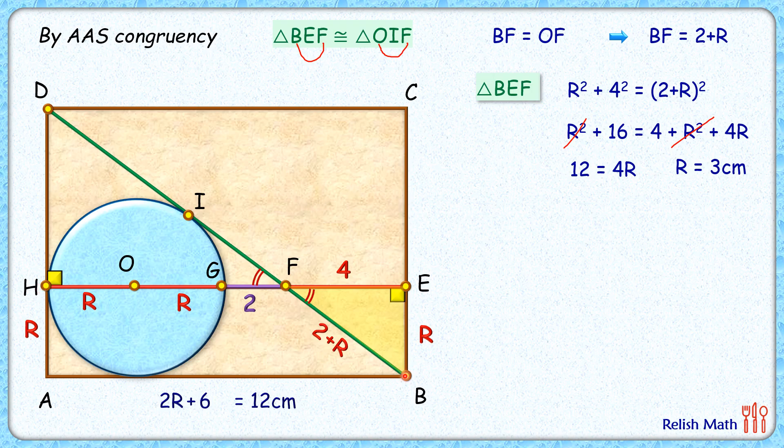For that we will consider the yellow triangle and this green triangle here. They have got these angles equal, vertically opposite angles. They have got 90 degree angles. So by angle angle similarity, we can say that triangle BEF is similar to triangle DHF.